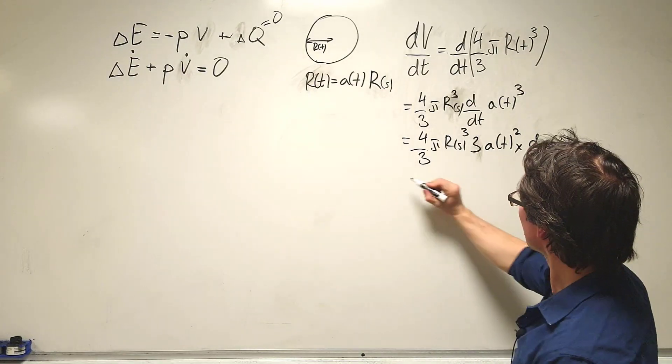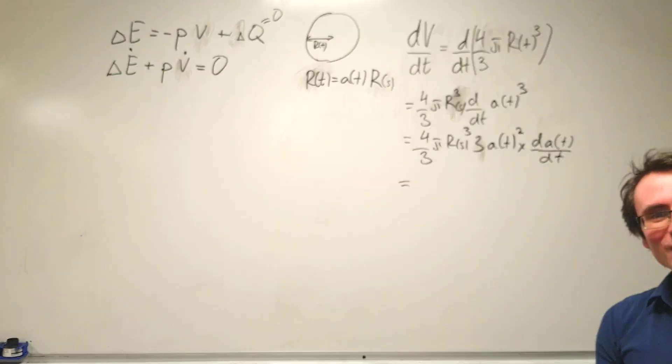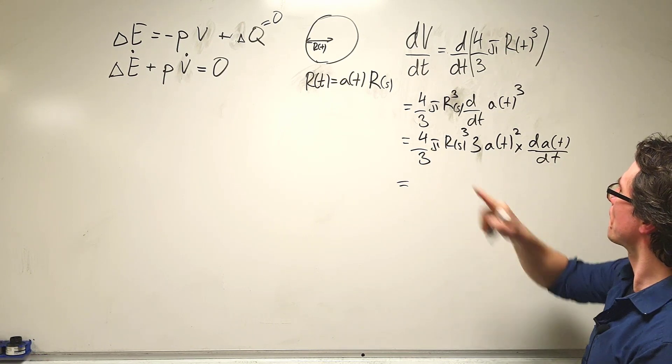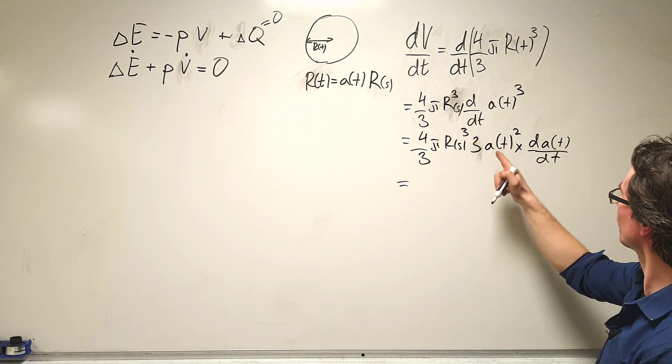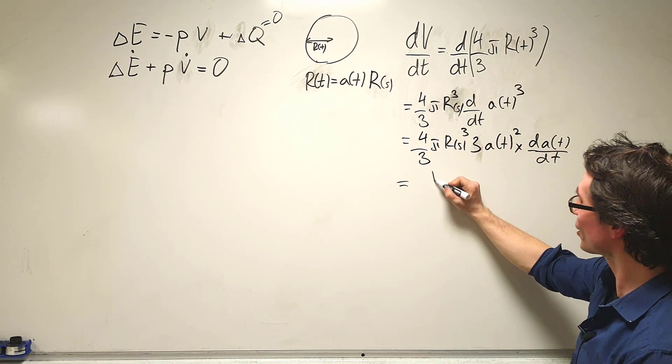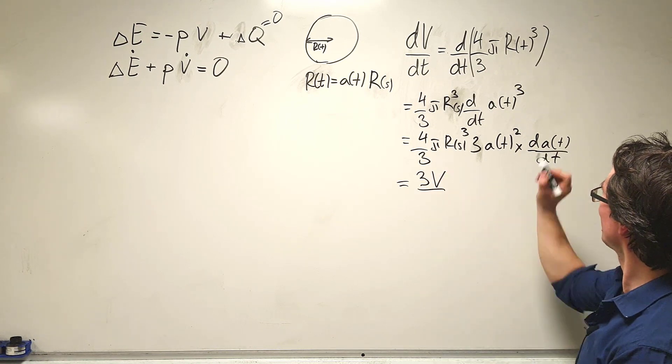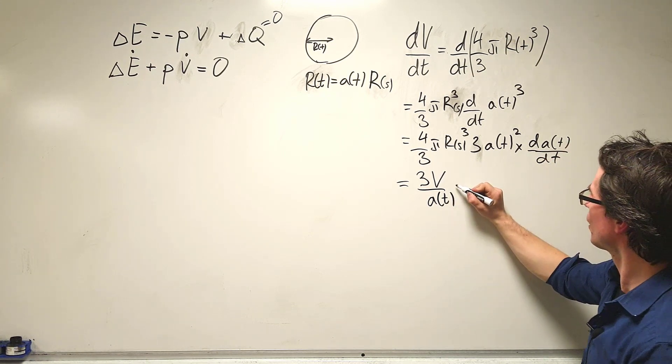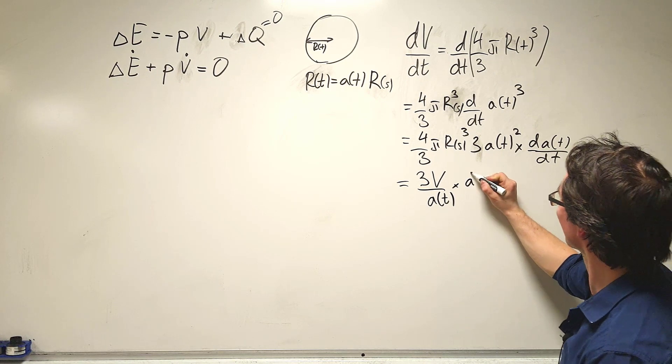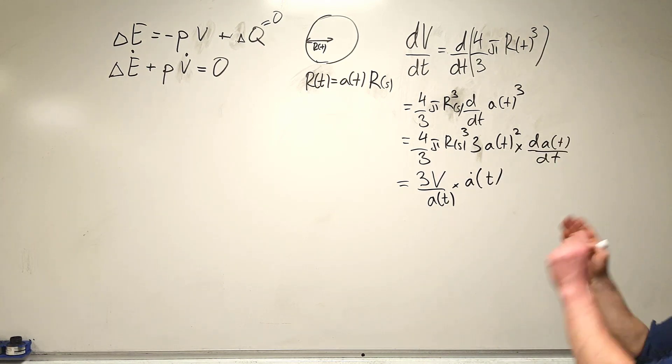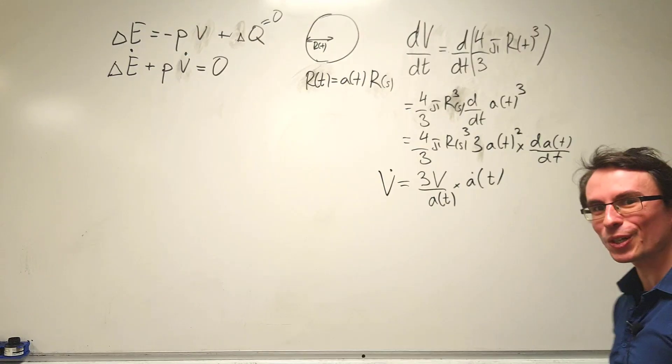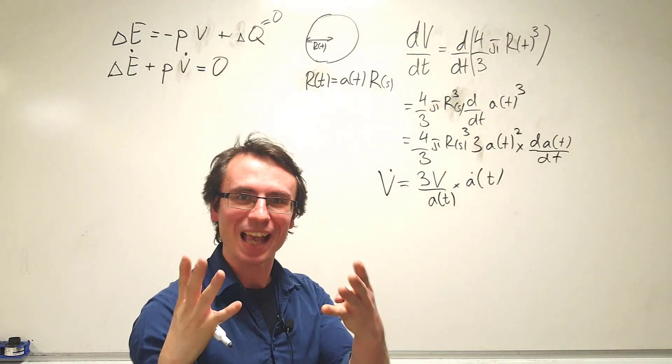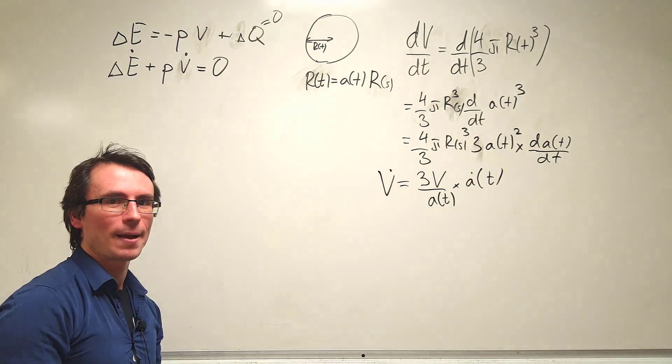This is actually a function in terms of the original volume, because the original volume is just four thirds pi rs cubed multiplied by a(t) cubed. So this is actually just three times the original volume divided by a(t) times da/dt. As shorthand notation, I'm going to write this as a dot. We've expressed V dot as a function of the original volume times the derivative of the scale factor, which tells us how the universe is indeed accelerating.